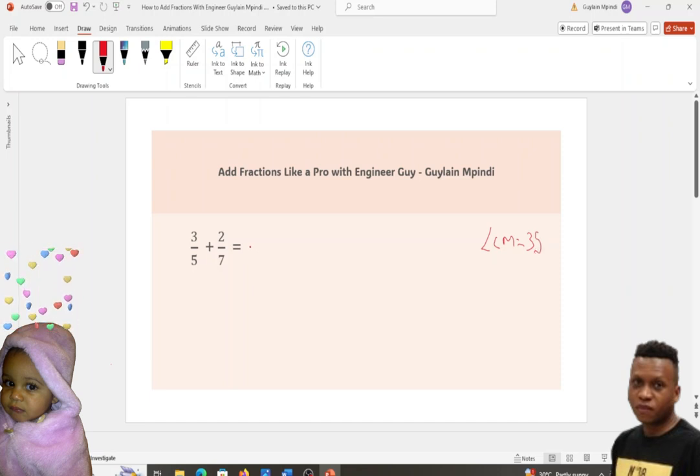Now, you see this 5? We're gonna write it right here. 5 times this 7. You see this 7 and 3?